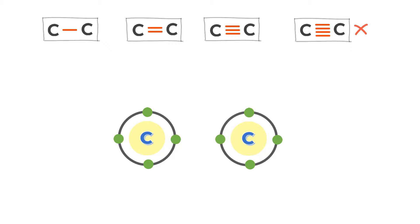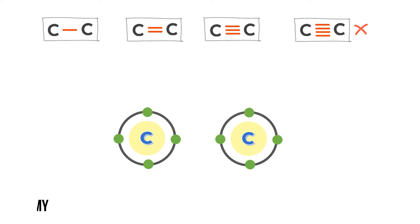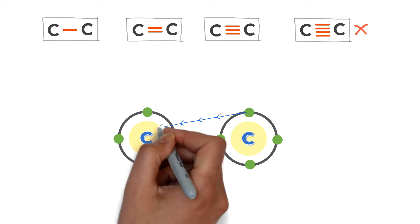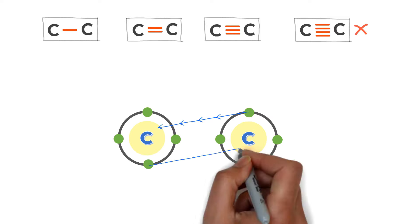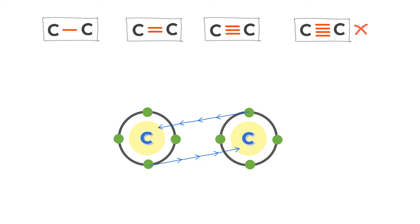Consider the first carbon atom — there are four electrons in the valence shell of each carbon atom. To form a covalent bond, the nucleus of the first carbon atom attracts the electrons of the second carbon atom. Similarly, the nucleus of the second carbon atom attracts the electrons of the first. Due to this mutual attraction, both carbon atoms come together to form a single bond.